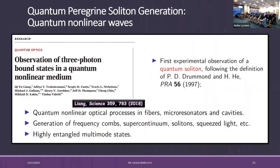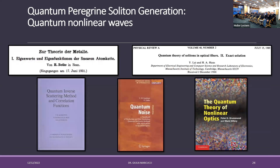I should be interested in studying quantum nonlinear waves because they are being observed. As you can see from this 2018 paper, they were able to observe a quantum soliton — following the definition given by Drummond — with just three photons. Also, these new states can be very interesting for many applications, not least the generation of highly entangled multimode states useful for quantum computing.